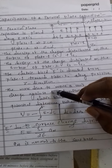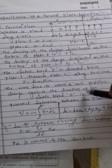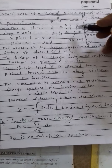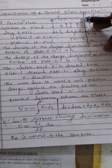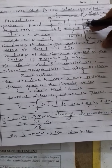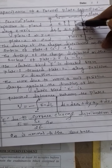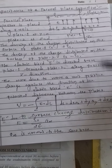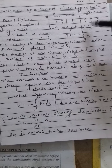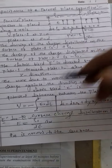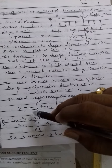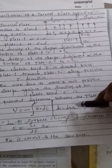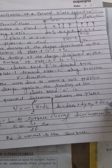The work done to move a unit positive charge against the direction of the electric field E — that is, moving a unit positive charge from plate 1 towards plate 2 against the direction of E — is the potential difference between the plates. The potential difference V equals minus integral of E dot dL, where dL equals dx a_x plus dy a_y plus dz a_z.